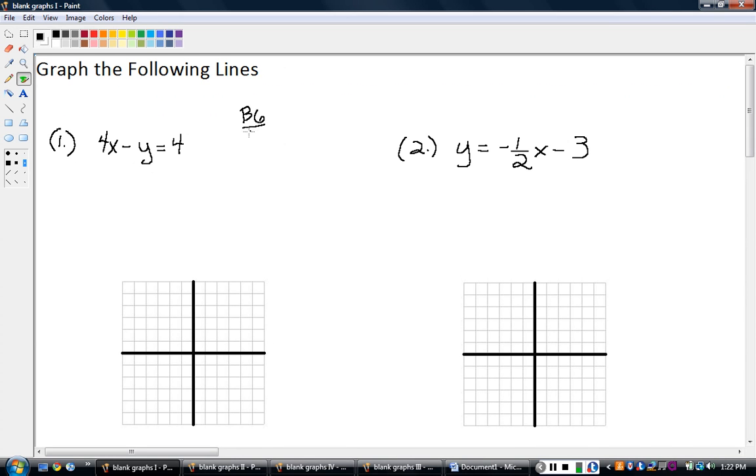We did graph lines a couple chapters ago in what we call standard form, X and Y on the same side. And now we're going to deal with these guys in this chapter. A lot of them are going to be in what's called slope-intercept form, which we talked about in the last couple chapters. So first, let's do the one more as a review.